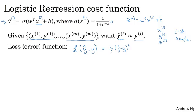It turns out that you could do this, but in logistic regression, people don't usually do this because when you come to learn the parameters, you find that the optimization problem becomes non-convex. So you end up with optimization problem with multiple local optima, and gradient descent may not find a global optimum. If you didn't understand the last couple of comments, don't worry about it. We'll get to it in a later video. But the intuition to take away is that this function l, called the loss function, is a function we'll need to define to measure how good our output y hat is when the true label is y. Squared error seems like it might be a reasonable choice, except that it makes gradient descent not work well.